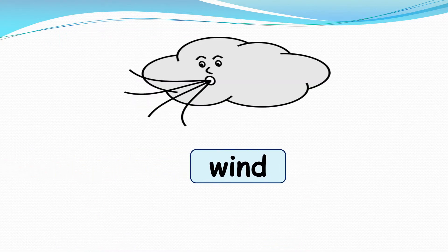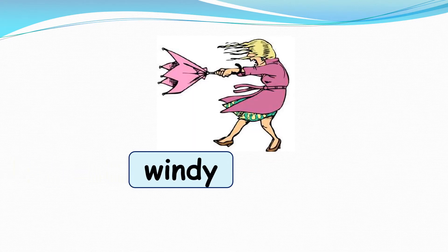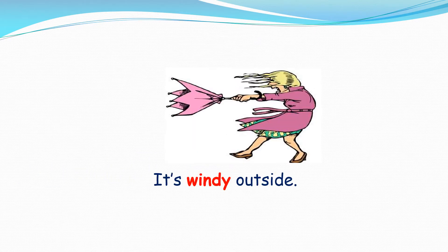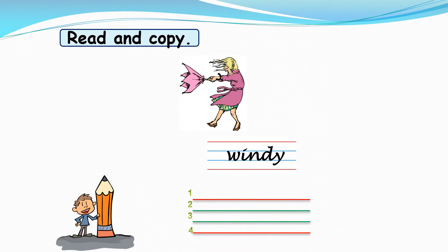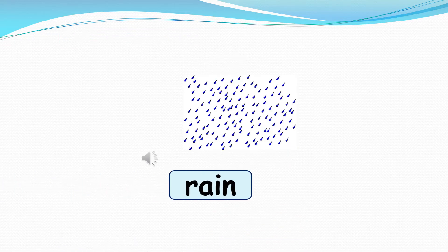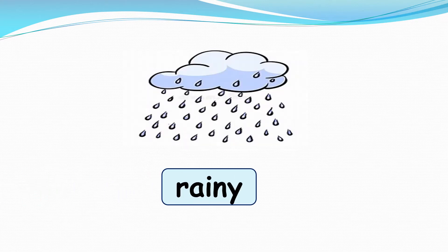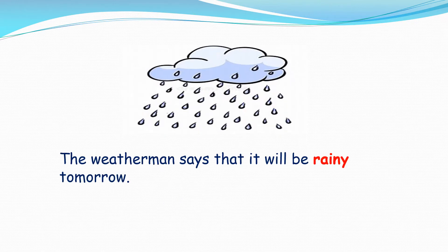Wind, windy — it's windy outside. Rain, rainy — the weatherman says that it will be rainy tomorrow.